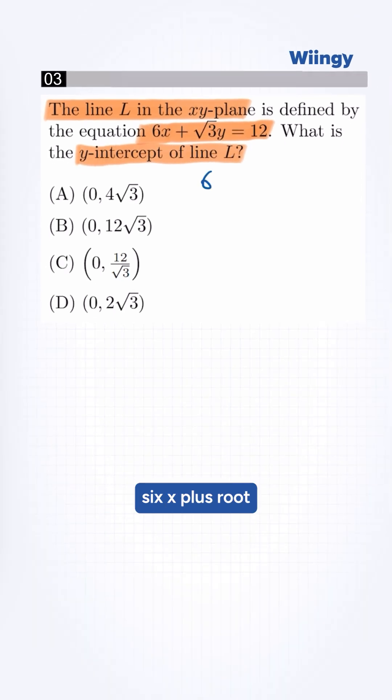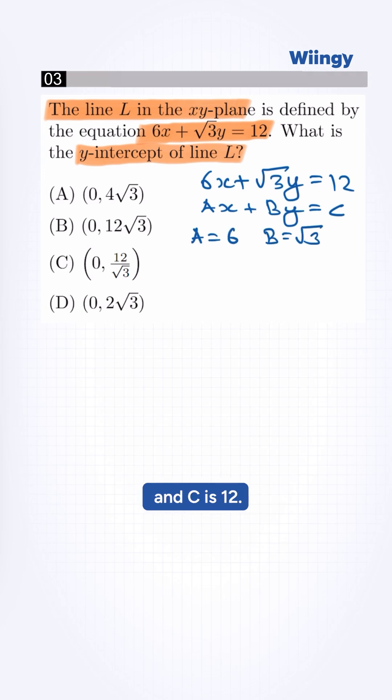The equation is given 6x plus root 3y is equal to 12, which is in the form of ax plus by is equal to c. Here, a is 6, b is root 3, and c is 12.